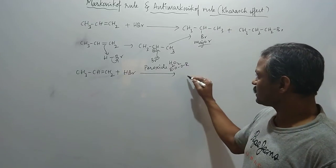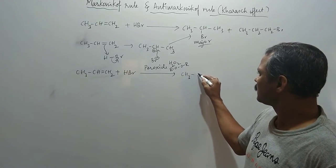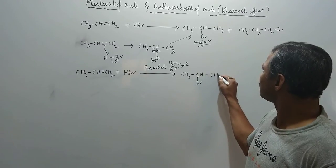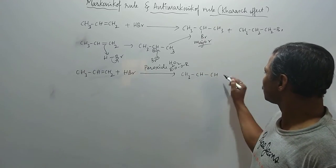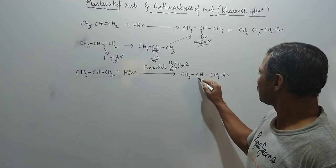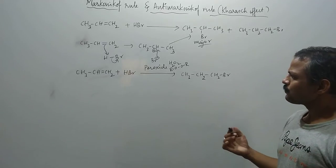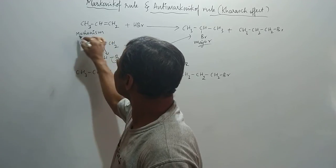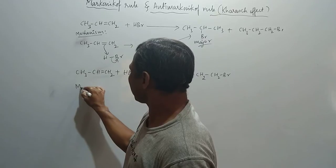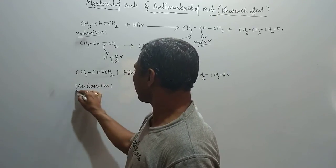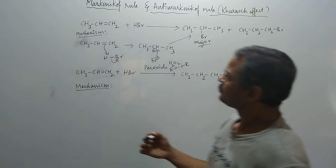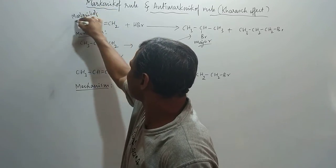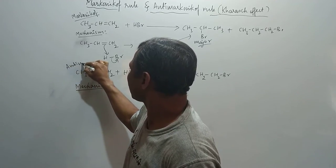Here in the presence of the peroxide, it shows the other product. That means we get here the product CH2Br-CH2-CH3. So here is the mechanism. Here the mechanism is: we call this Markovnikov's rule and we can consider it as anti-Markovnikov's rule or it is also called Kharash effect.